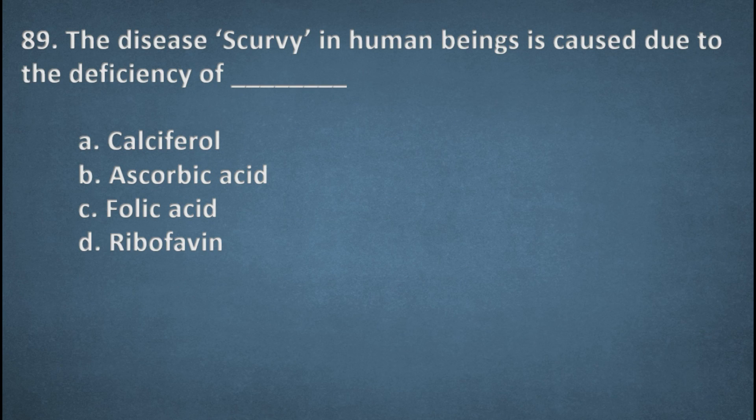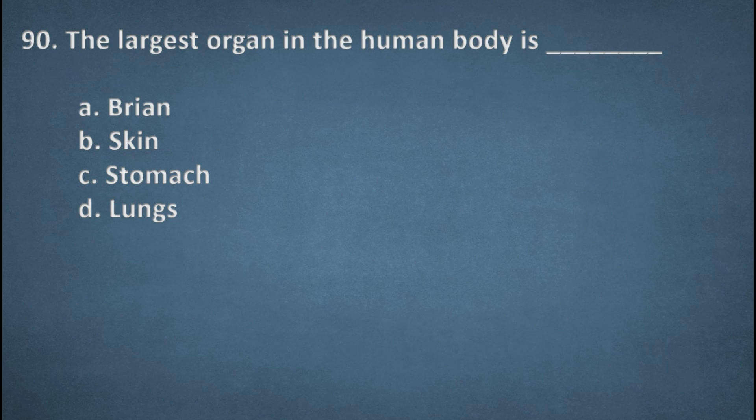Next one. The disease scurvy in human beings is caused due to the deficiency of options: Calciferol, Ascorbic acid, Folic acid, Riboflavin. The right option, B, Ascorbic acid. Next one. The largest organ in the human body is options: Brain, Skin, Stomach, Lungs. The right option, B, Skin.